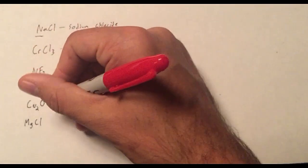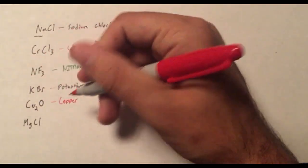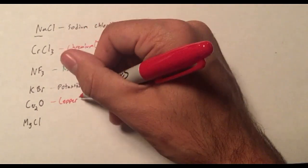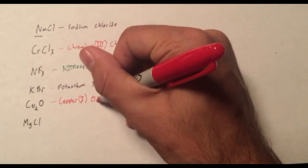So with that, we have copper, and we just said it must have a charge of plus one. It's going to balance out this two minus oxygen here. So we put one. Oxide.